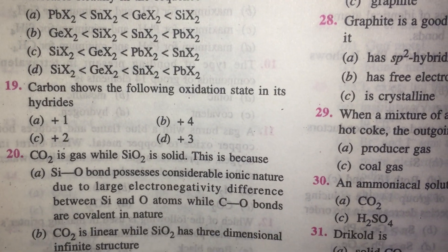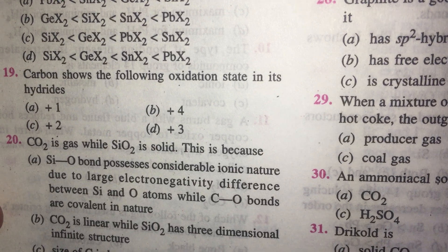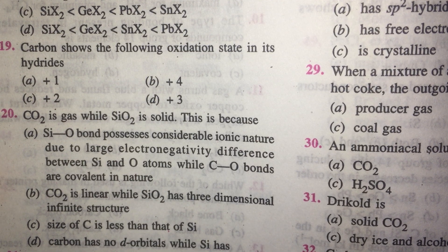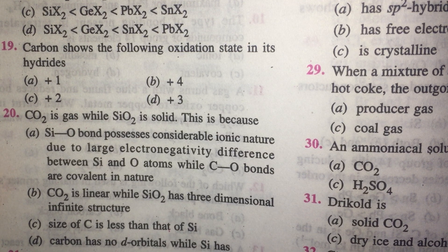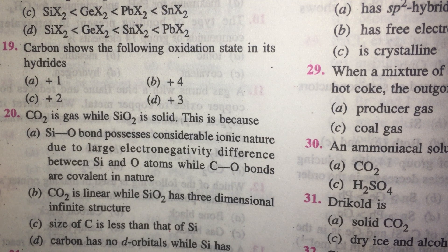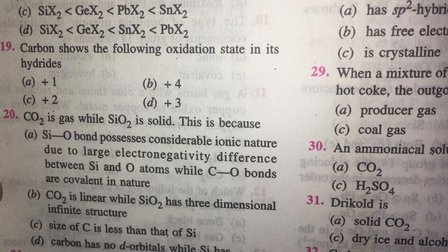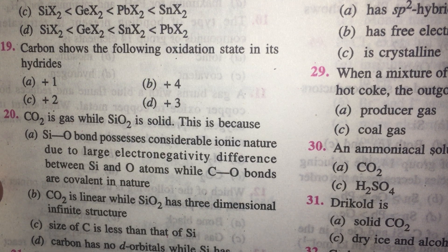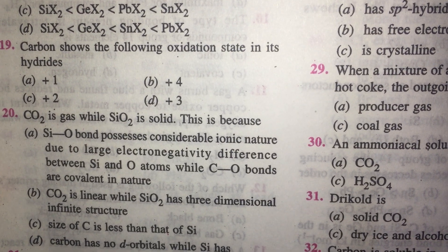CO2 is a gas while SiO2 is a solid. The right answer is A. The SiO bond possesses considerably ionic nature due to the large electronegativity difference between Si and O atoms, while CO bonds are covalent. Better still: SiO2 is a covalent network solid. Due to the inability of silicon to form pi bonds, SiO2 exists as a polymeric covalent network solid. Carbon, because of its ability to form pi bonds, exists as discrete CO2 molecules with very weak van der Waals attractions between them, so CO2 is a gas. The answer given in the book is not really appropriate, so the correct answer was provided.